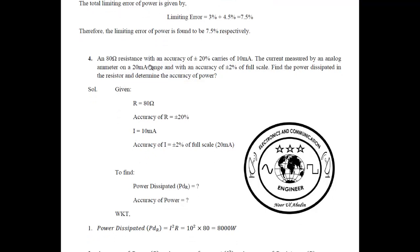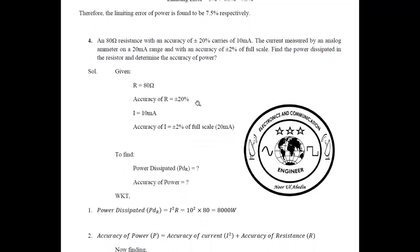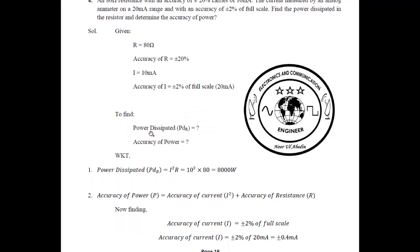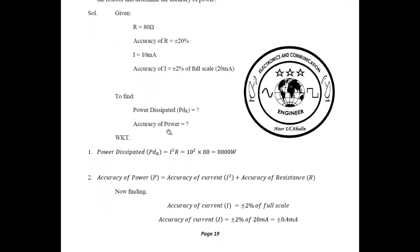The next problem: an 80-ohm resistance with an accuracy of plus or minus 20 percent carries 10 milliamps. The current is measured by an analog ammeter on a 20-milliamp range with an accuracy of plus or minus 2 percent of full scale. Find the power dissipated in the resistor and determine the accuracy of power. Given: resistance, accuracy of resistance, current, and accuracy of current. To find: power dissipated and accuracy of power.